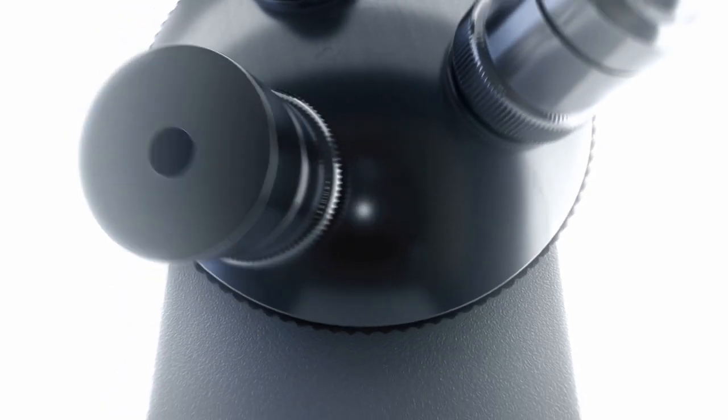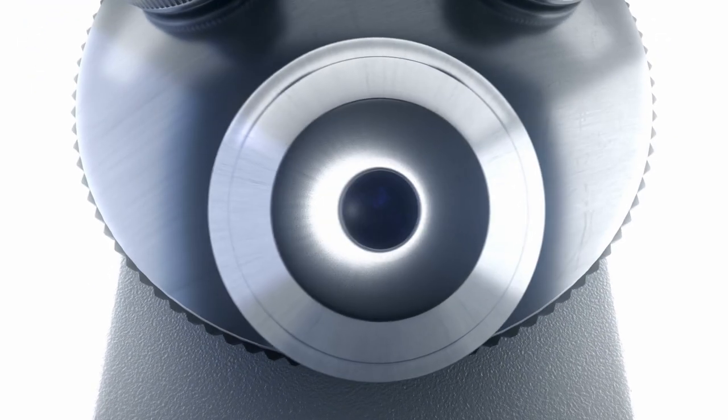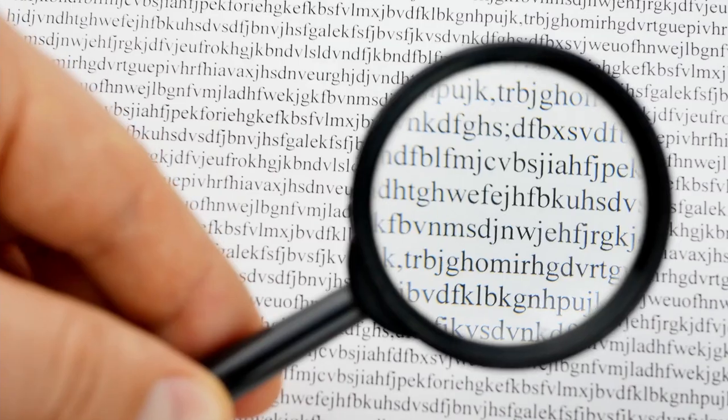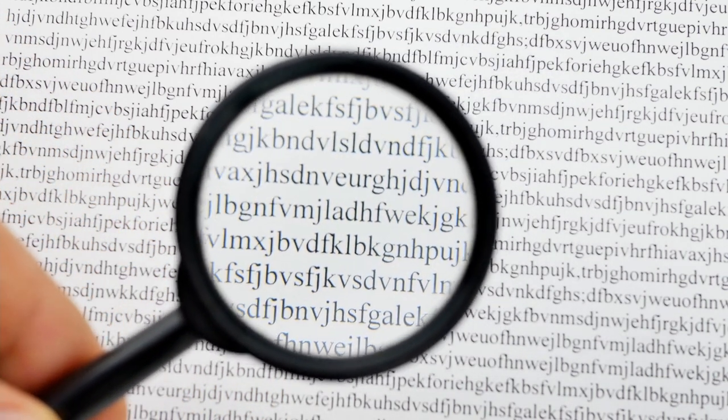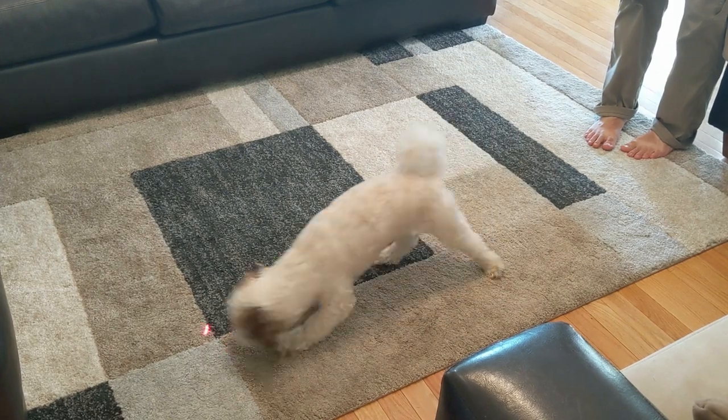Modern microscopes use the same principle, but instead of a drop of water, they have a glass lens. As light passes through the lens, it is diffracted, and the view is magnified. In our laser pointer microscope,